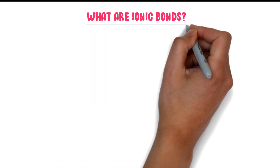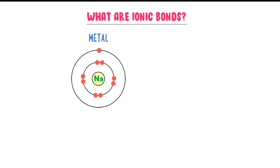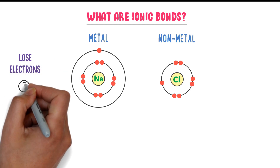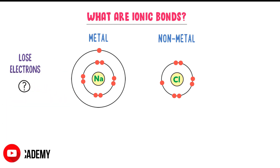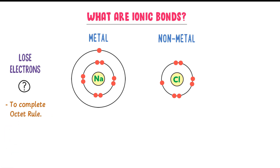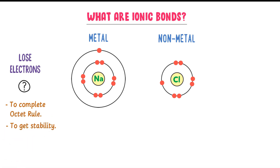What are ionic bonds? Consider a metal atom like sodium and a non-metal atom like chlorine. We know that metals lose electrons. If you ask why metals lose electrons, the answer is simple: metals lose electrons in order to complete the octet rule and get stability.